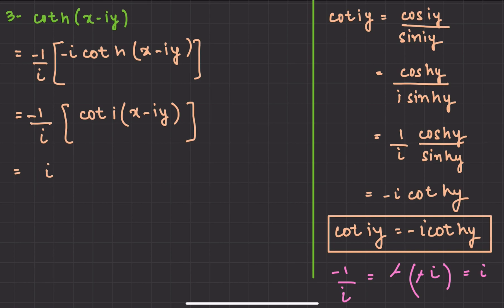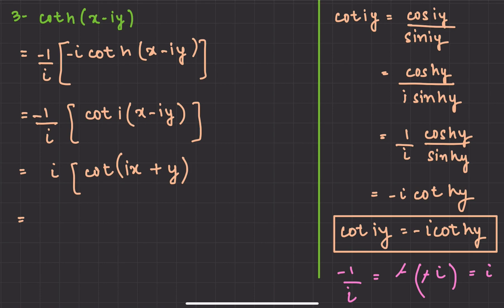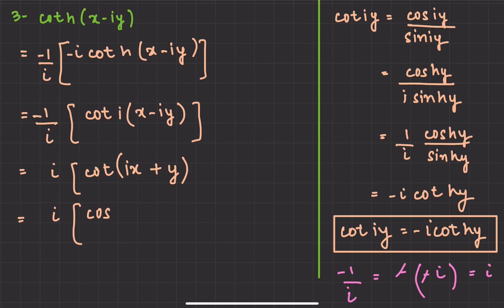So we put the value: it becomes iota. Multiplying iota inside gives cot(ix), and iota·iota = minus 1, so the minus and minus cancel leaving plus y. So we are left with cot(ix + y). Now, as discussed, the formulas only apply to sin and cos. So we write cot(θ) = cos(θ)/sin(θ), where θ = ix + y. So we have cos(ix + y) / sin(ix + y).